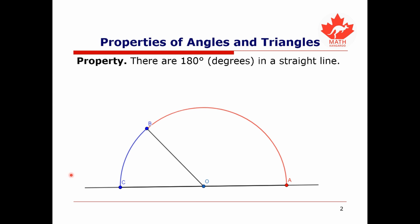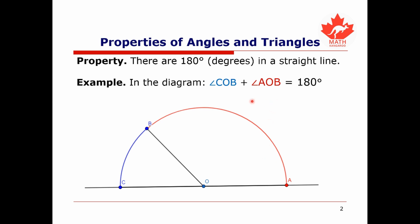First of all, we have a pretty useful property, which is that there are 180 degrees in a straight line. If I draw a straight line and pick three points on it — C, O, and A — the angle COA is 180 degrees. This is useful because we can break this big 180-degree angle into smaller sub-angles whose sum will always be 180 degrees. So if we know the angle COB, we can determine the angle AOB based on this.